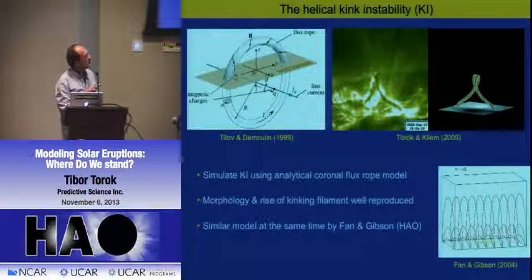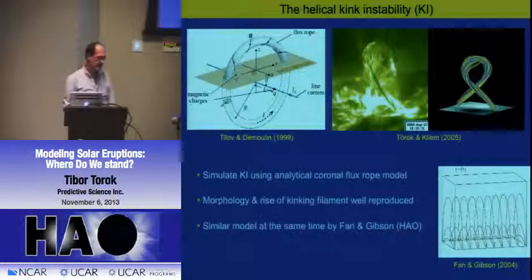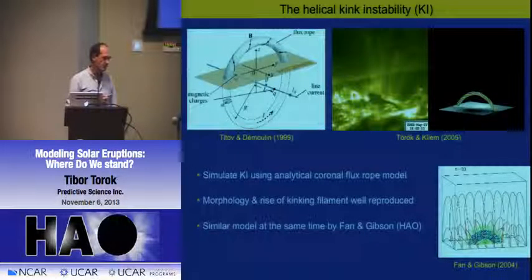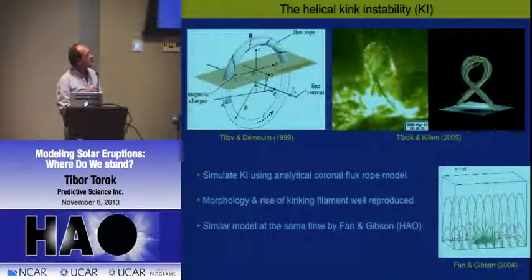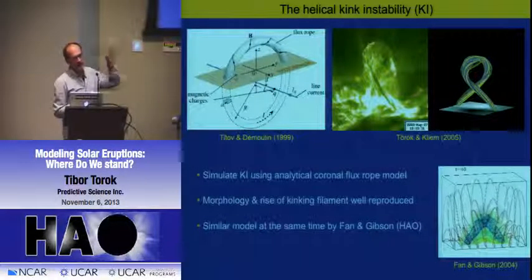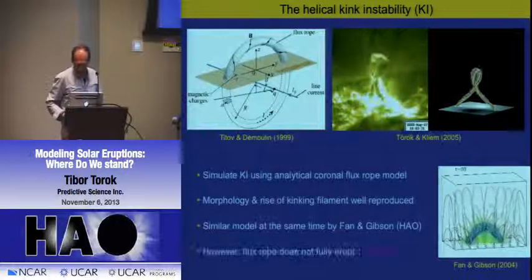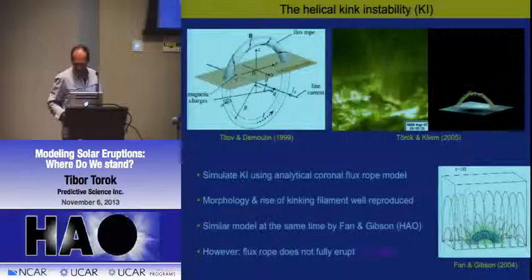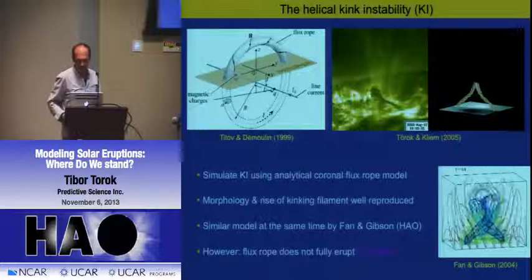You can even have X-class flares with confined eruptions—there are papers on that. The structure goes up to 80 megameters but is not able to leave the sun. So the question is whether something else is involved. One mechanism we looked at is what we call the torus instability.